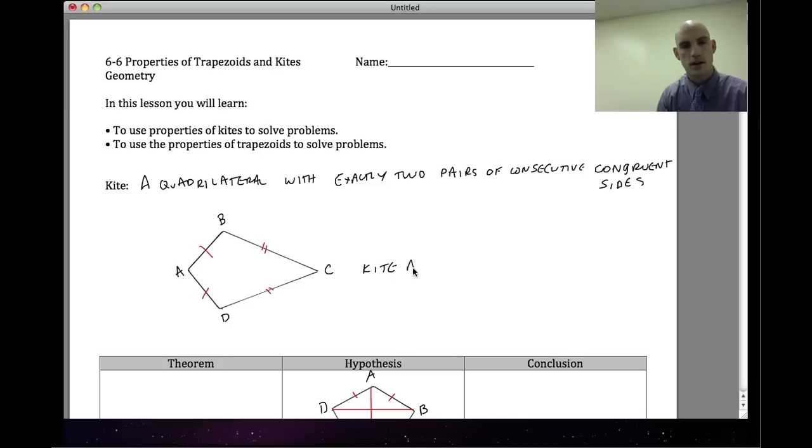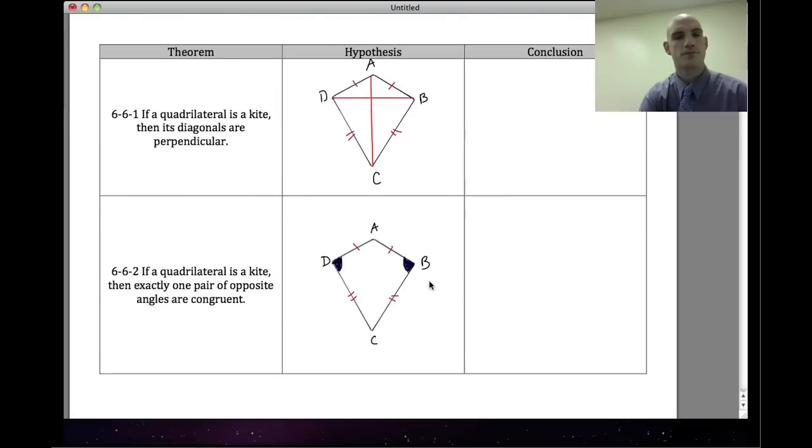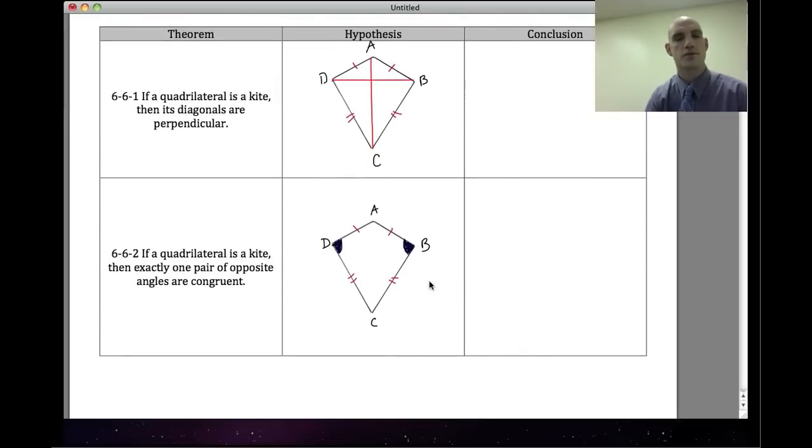We would call this kite ABCD. We've got a couple of properties of kites that we're going to go through. In theorem 6.1, if a quadrilateral is a kite, then its diagonals are perpendicular.